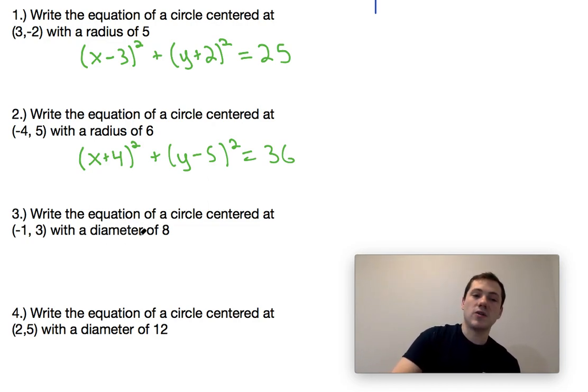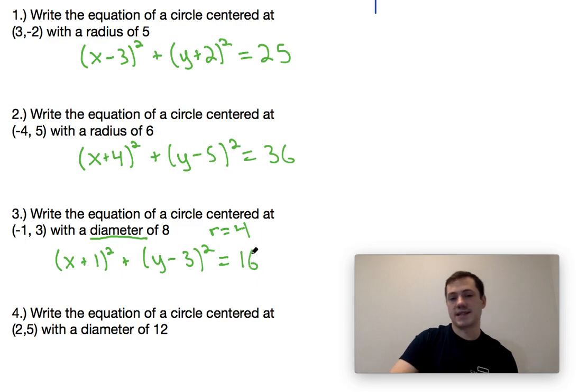For a circle centered at negative one comma three with a diameter of eight, that's how the SAT will make it just a little bit more tricky. Just remember that a diameter of eight means a radius of four. So your circle equation is going to be x plus one squared plus y minus three squared equals four squared, which is 16.